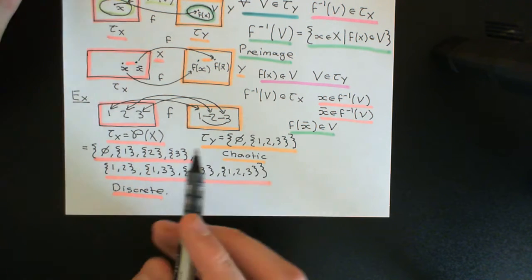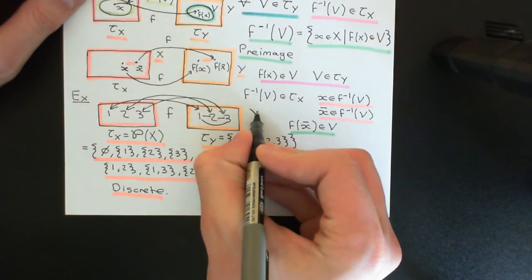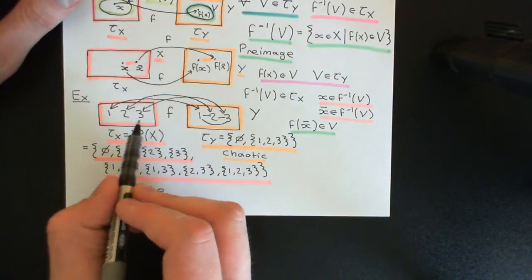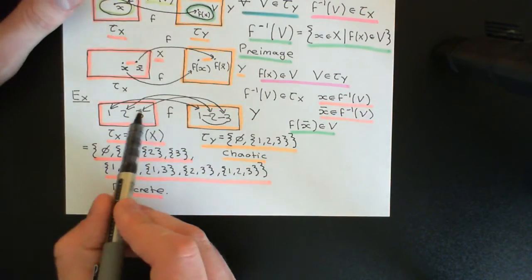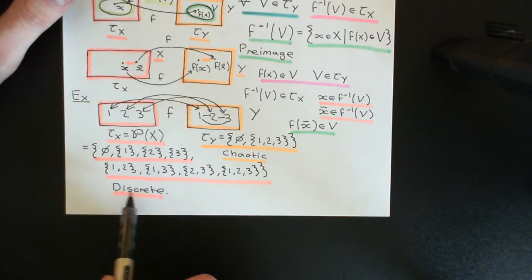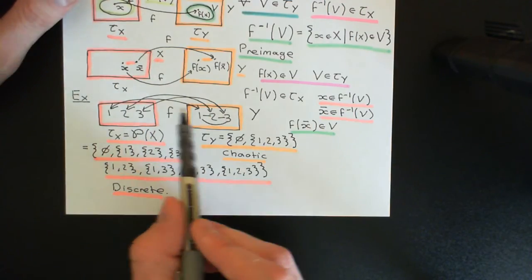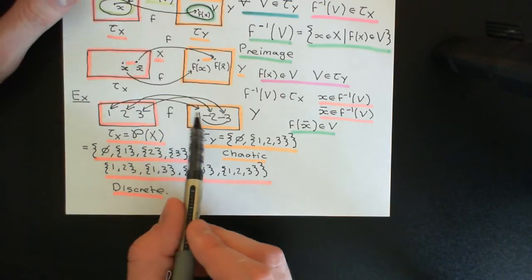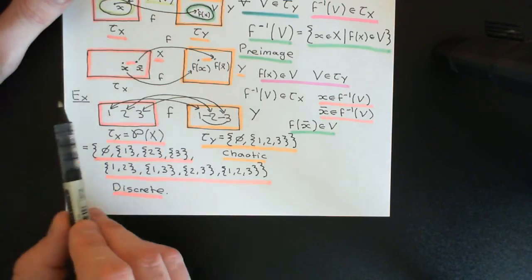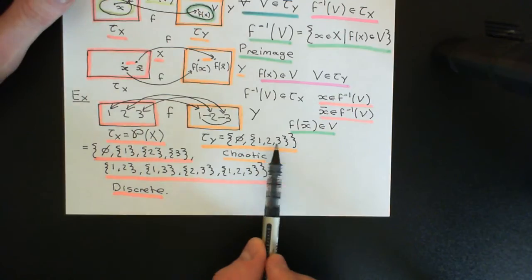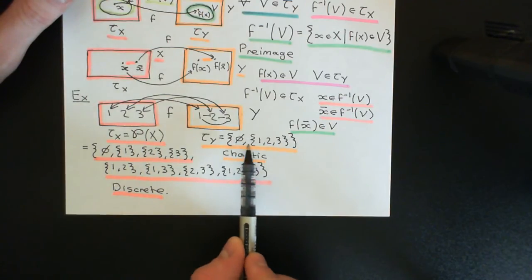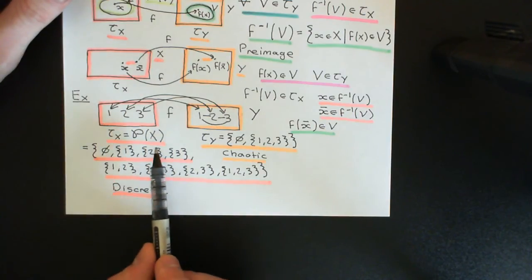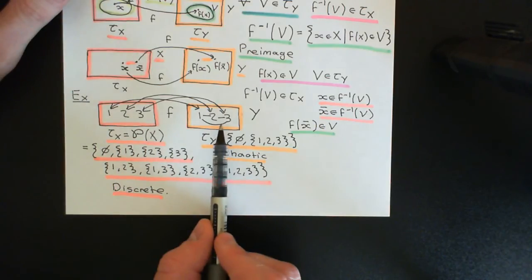You could have done this actually for any set — it really did not matter that this set we'd chosen was the set containing one, two, and three. So take whatever set you like, however big you want it, make this set both the domain and co-domain, put the discrete topology on one of the sets (maybe the domain), and put the chaotic topology on the co-domain, and then define the function between them to be the identity map. The forward function will be a continuous function, because if we've got the chaotic topology, the only two subsets are the empty set and the entire set, which will have pre-images — the empty set and the entire set back in the discrete topology — and therefore it will be a continuous function.